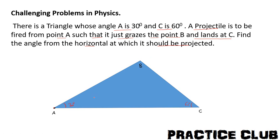We need to fire a projectile from point A such that it follows a path moving from point A, grazing point B, and finally landing at point C. We have to find the angle theta at which we should project the projectile from the horizontal such that this condition becomes possible.